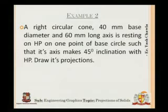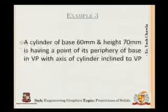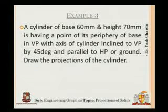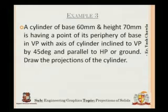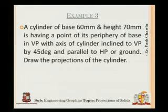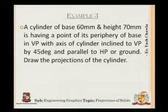Let's move on to the next question. A cylinder of base 60 mm and height 70 mm has a point on its periphery of the base in VP, with the axis of the cylinder inclined to VP by 45 degrees and parallel to HP. Draw its projections.